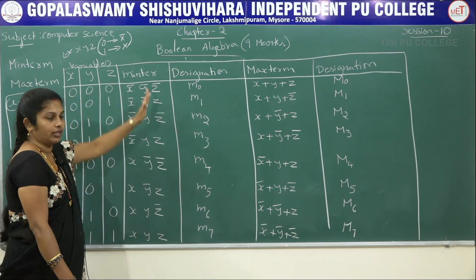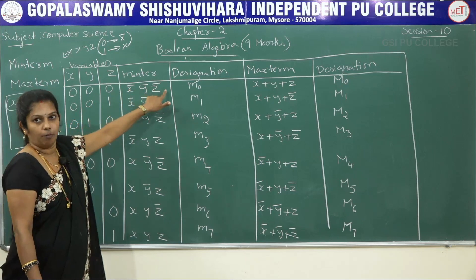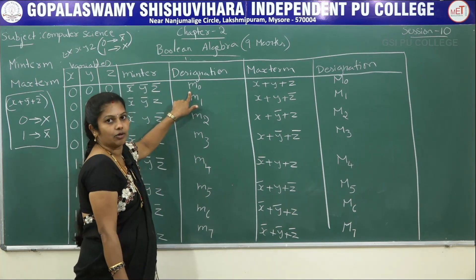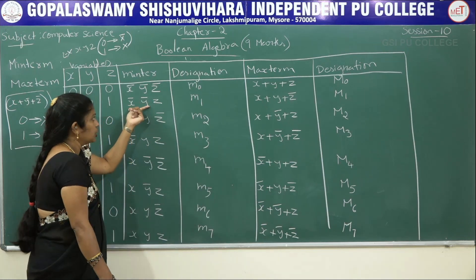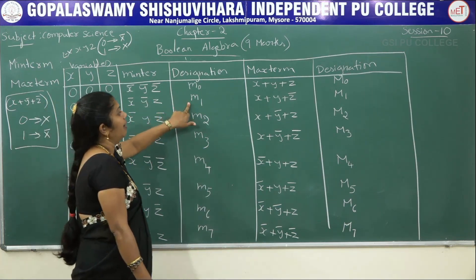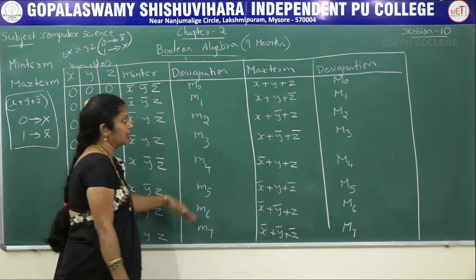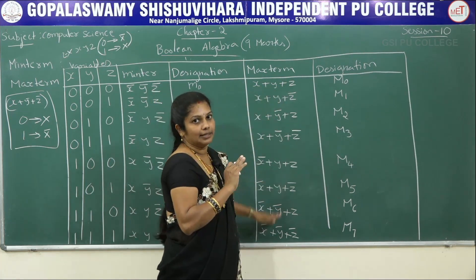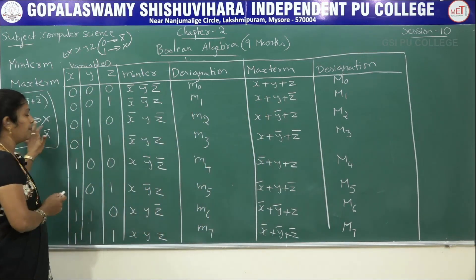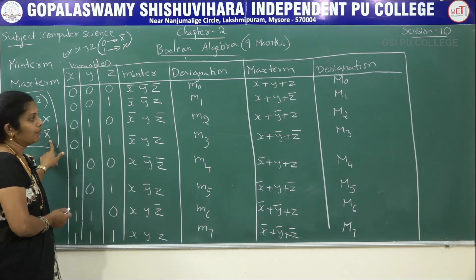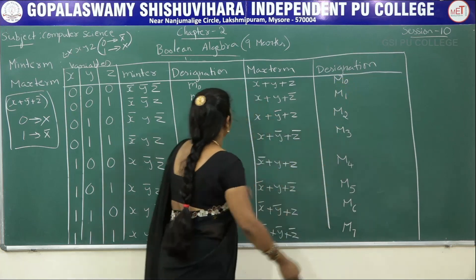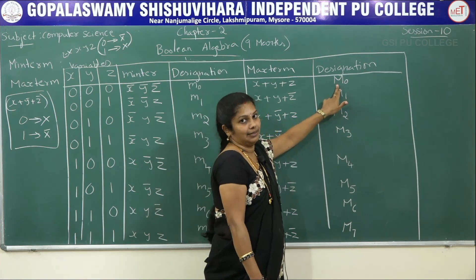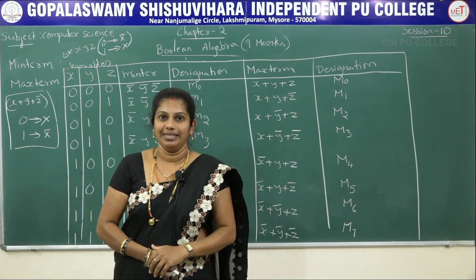To summarize: in minterm, it is a product of all variables; wherever we have zero, put a complement. When all three variables are complemented it is called m0 (the designation). In maxterm, it is a sum of all literals; 0 represents without bar and 1 represents with bar. Minterms are designated in small letters and maxterms in capital letters. Next class we will continue with the remaining topics. Thank you all.